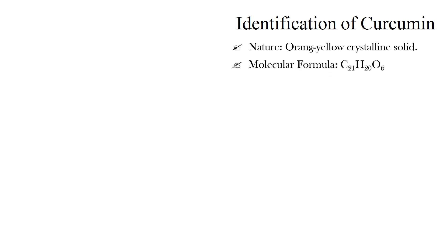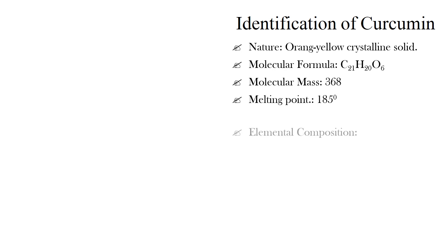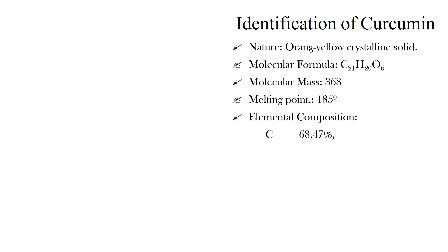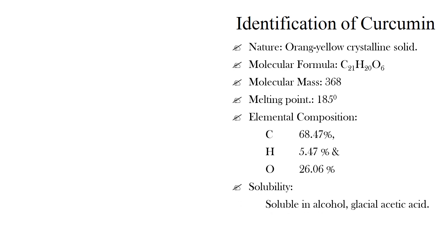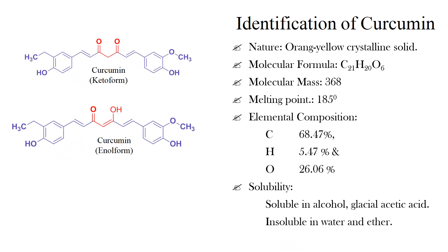Curcumin is an orange-yellow crystalline solid of molecular formula C21H20O6, with a molecular mass of 368 and a melting point of 185°C. The elemental composition of curcumin is carbon 68.47%, hydrogen 5.47%, and oxygen 26.06%. Curcumin is soluble in alcohol, glycerol, glacial acetic acid, and insoluble in water and ether.